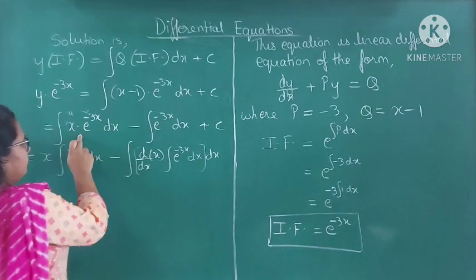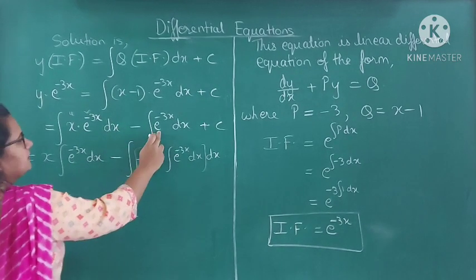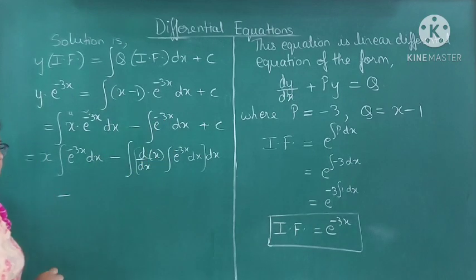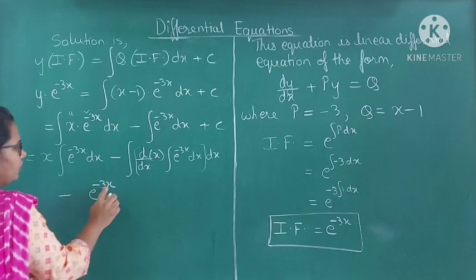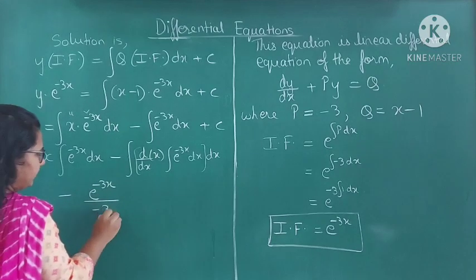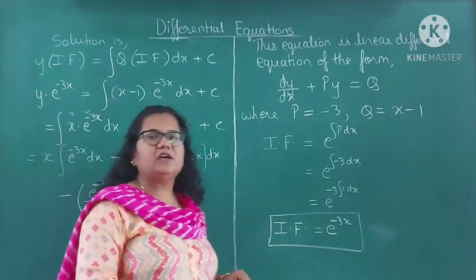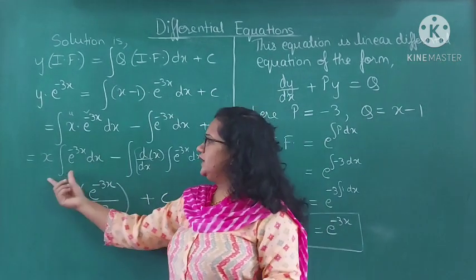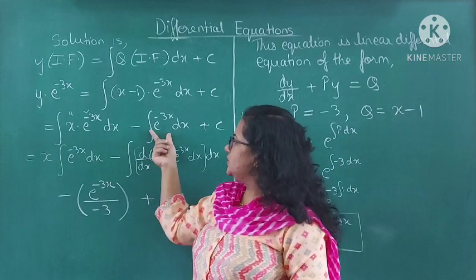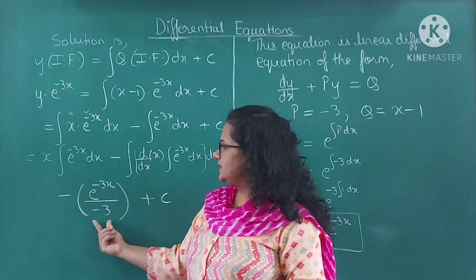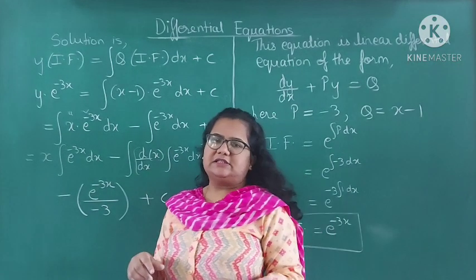Using integration by parts: u times integration of v, minus integration of derivative of u times integration of v, all of this dx. This is for the first term. Then for the second term: integration of e raised to minus 3x is e raised to minus 3x divided by the coefficient of x, that is divided by minus 3, plus C.